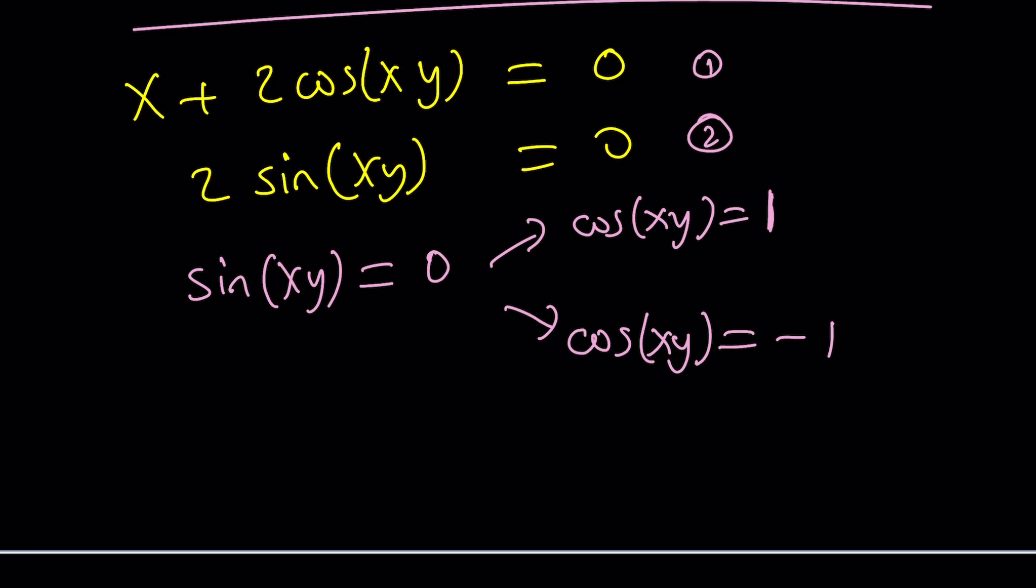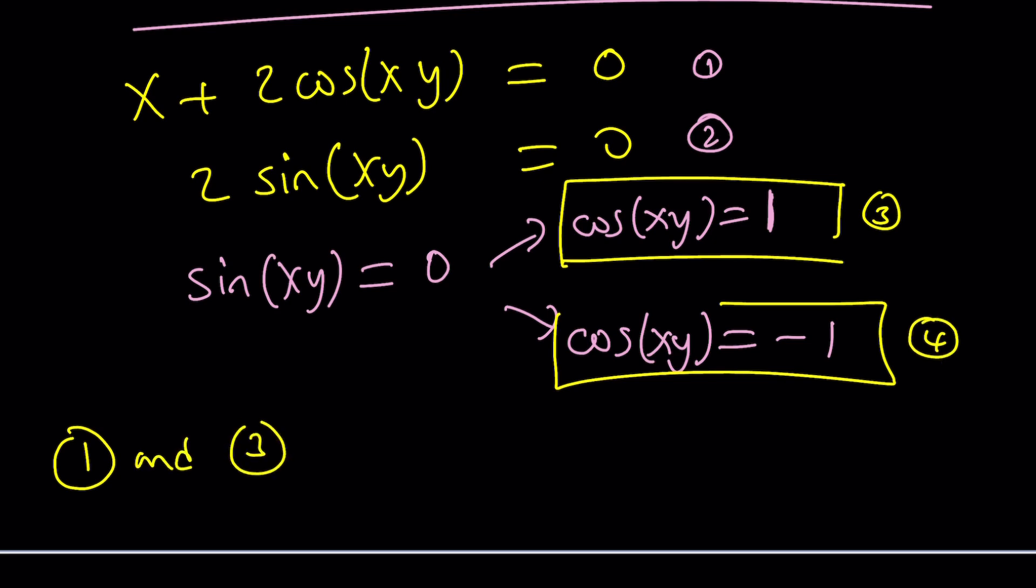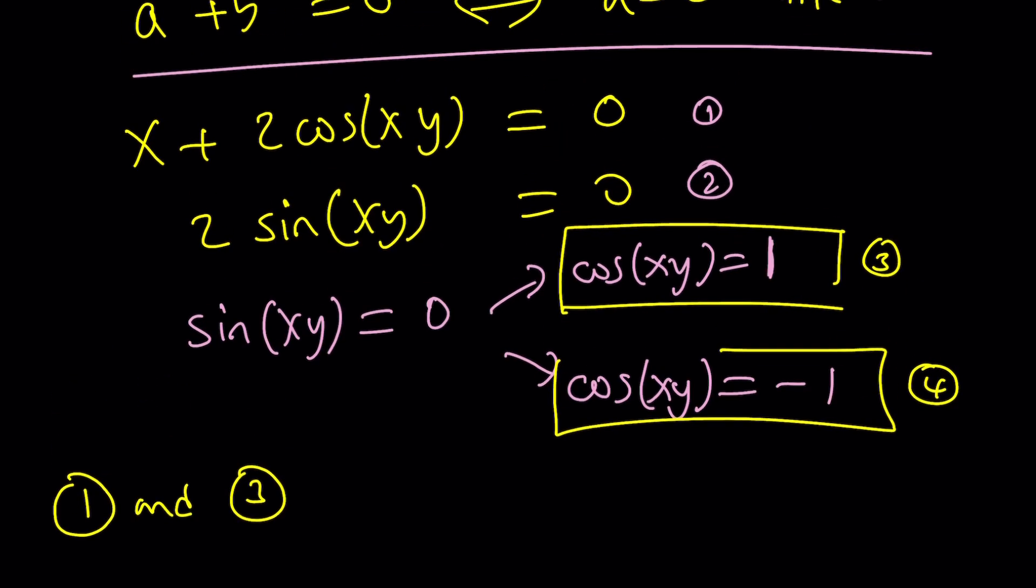What does that mean? It means we can plug it into the first equation, this one and this one. So let's just use, with the first one, this third equation, and then we'll use the fourth. So 1 and 2. I mean 1 and 3. So we're going to plug it in. That's going to be 2. So x plus 2 is zero.